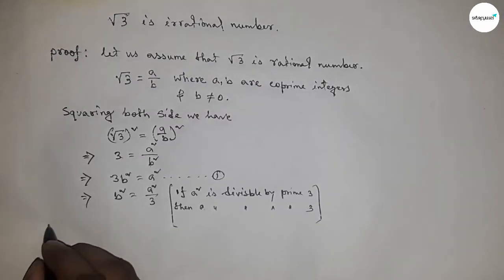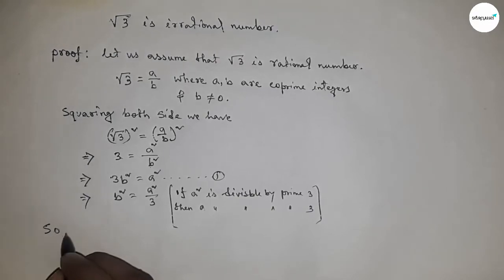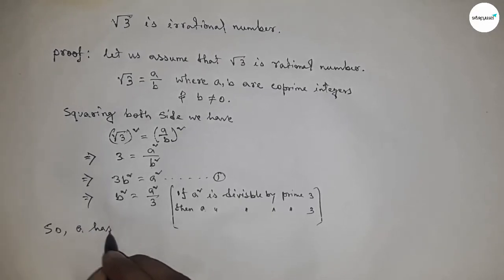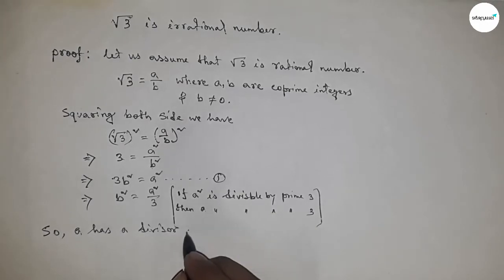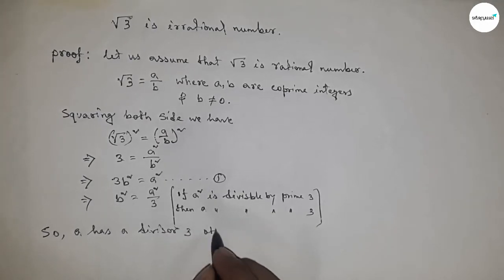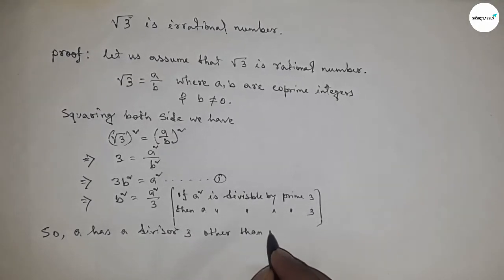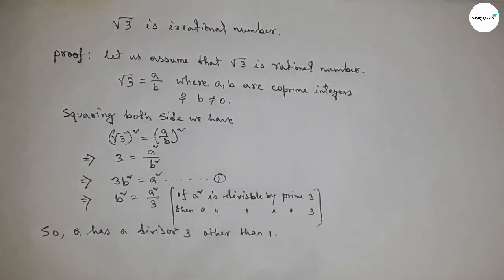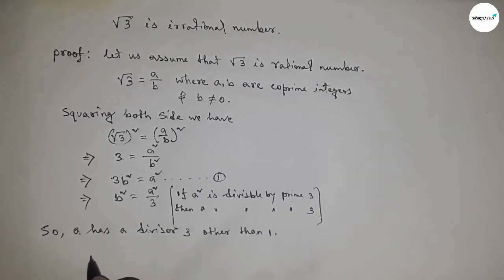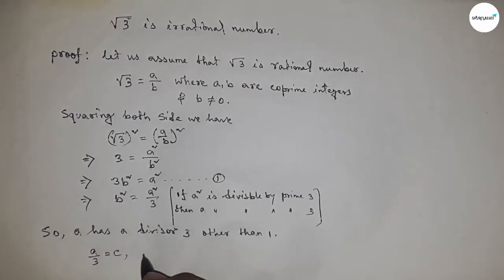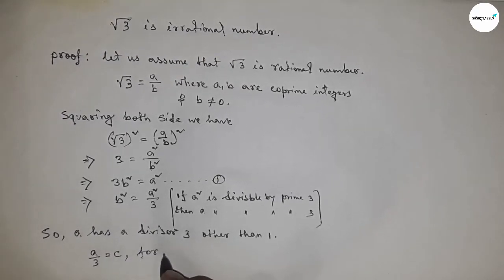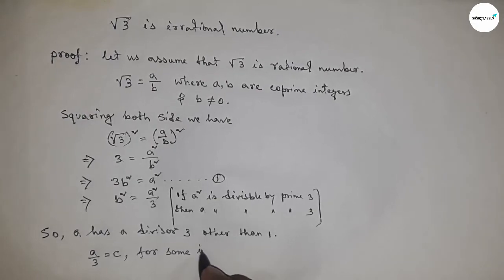So a is divisible by 3, which is a divisor other than 1, since we first assumed a had only 1 as a divisor. Since a is divisible by 3, we can write a divided by 3 equal to c, for some integer c.